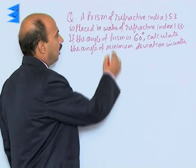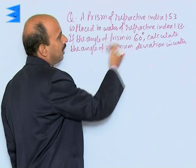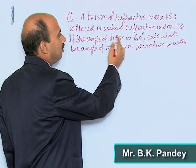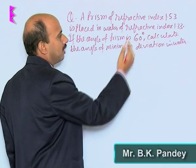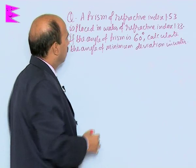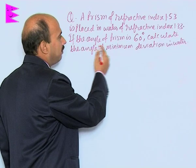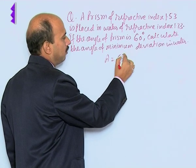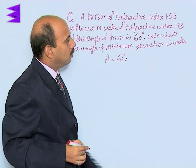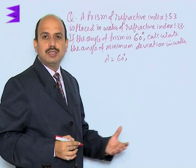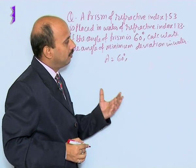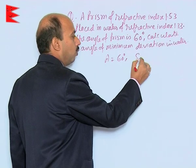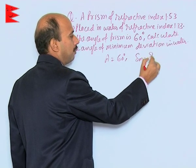In this question, a prism of refractive index 1.53 is placed in water of refractive index 1.33. If the angle of prism A is equal to 60 degrees, calculate the angle of minimum deviation in water.